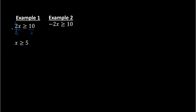Example 2 is still the same solving, but here we will need to switch the inequality because we have negative 2 times x. To get rid of it I divide by negative 2. Because I'm dividing by negative 2, I will need to switch the inequality from greater than to less than. On the left I have x, on the right I have 10 over negative 2 which is negative 5. So I switch the inequality from greater than to less than.